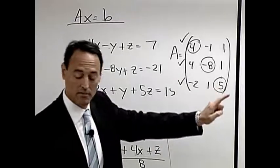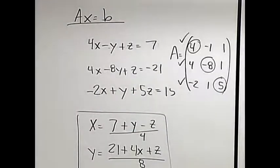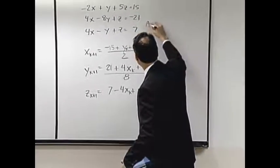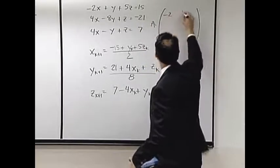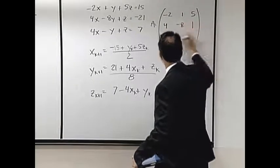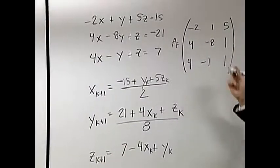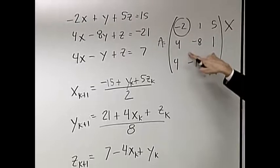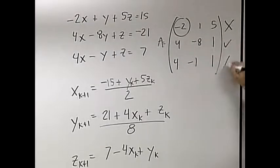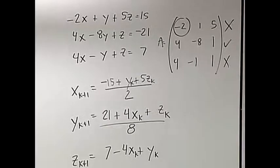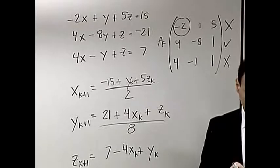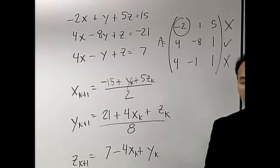Let's go to the other way we wrote it and ask the same question. Here is the second way we wrote this—remember, this is just a rearrangement. If we think about what the matrix A would be here: negative 2, 1, 5; 4, negative 8, 1; 4, negative 1, 1. We can go row by row. Is 2 bigger than 6? Nope. 8 is bigger than 5. 1 is not bigger than 5. So I fail in two of the rows. All I need to do is fail in one and it's over. This is why one worked and one didn't.